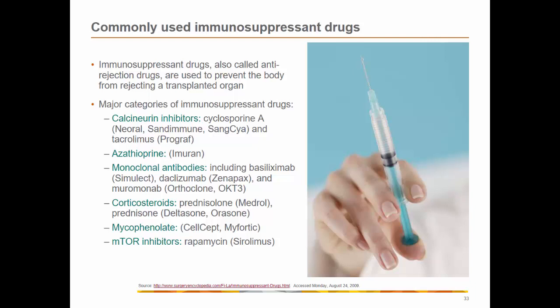Immunosuppressants control graft rejection and are primarily responsible for the success of transplantation. However, they suppress all immune responses and contribute to many post-transplantation complications, including death due to overwhelming infection. Immunosuppressants must usually be continued long after transplantation, but initially high doses can be reduced a few weeks after the procedure and low doses continued indefinitely unless rejection occurs. Corticosteroids are one type — a high dose is given at the time of transplantation, then reduced gradually to a maintenance dose given indefinitely. In children, corticosteroids can be given on alternate days to prevent growth restriction.